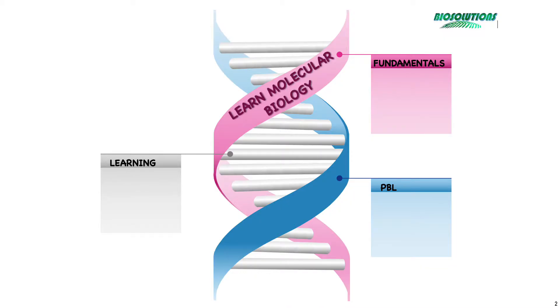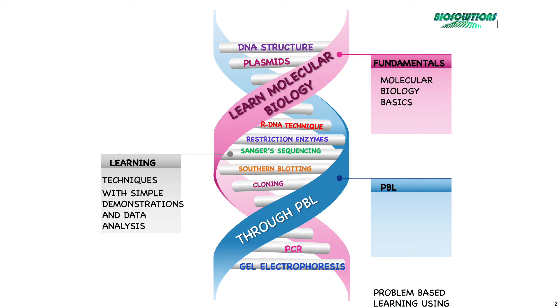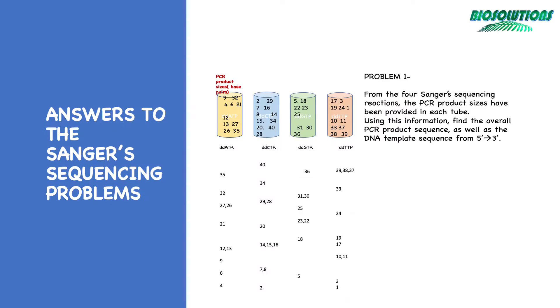Since we have already learned DNA structure and sequencing, learning restriction digestion will be our third step and will help us learn about recombinant DNA technique and cloning, which I will cover soon. Before we begin, let's have a look at the answers for the sequencing problems given in last week's video.